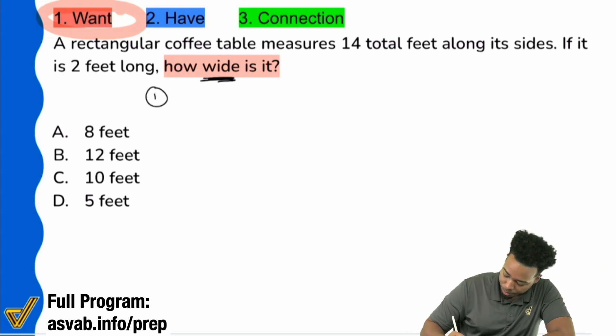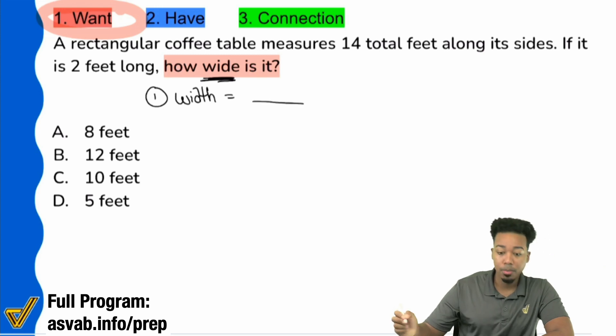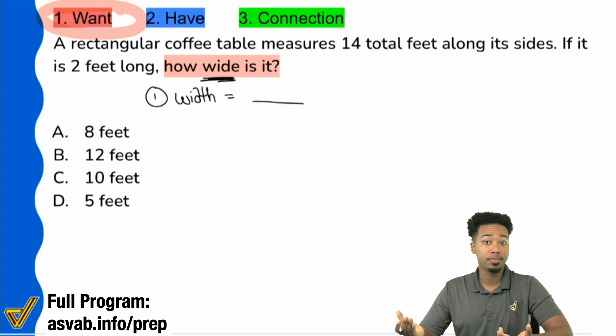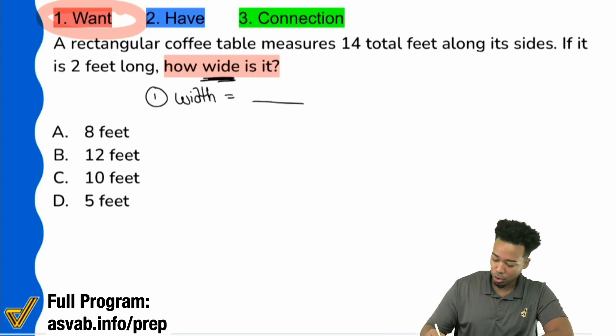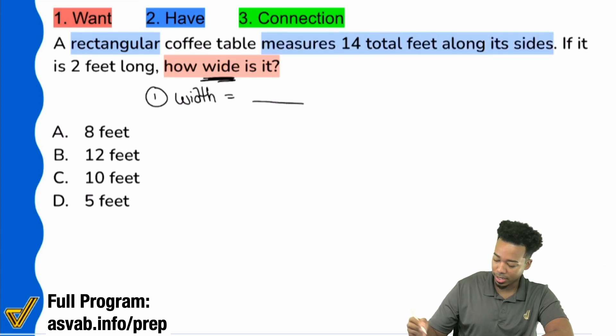So that's exactly what we'll have here. We want to know the width, but we want to know the width of what? This is where we're going to start gathering information. A rectangular coffee table measures 14 feet total along its sides, and we know it's two feet long.